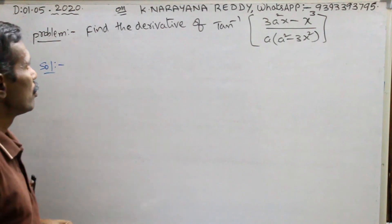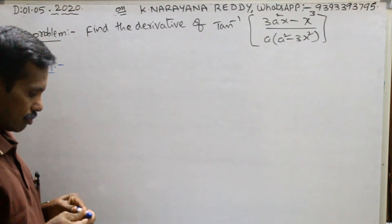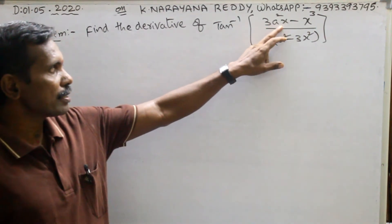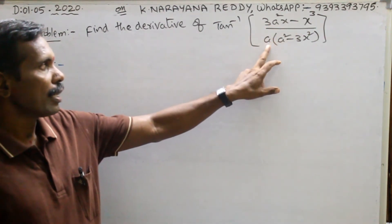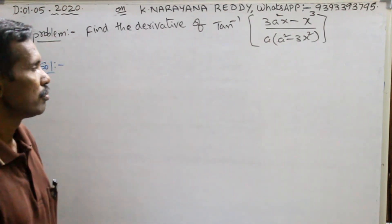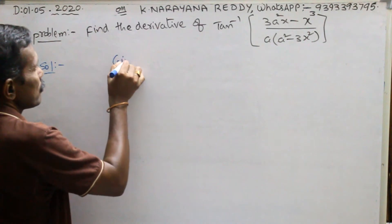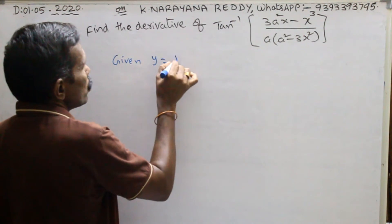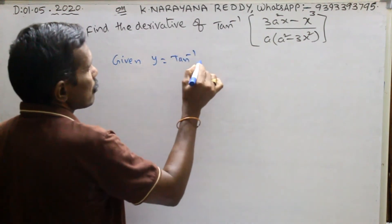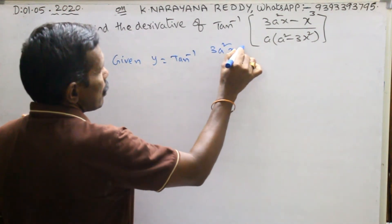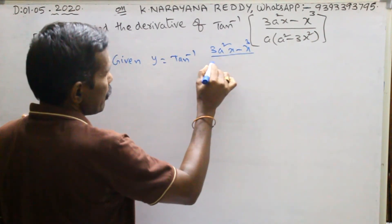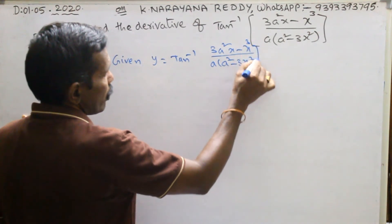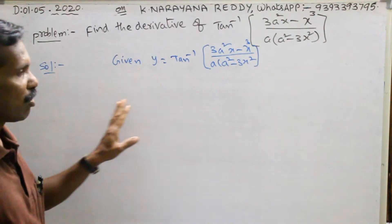See here — find the derivative of tan inverse of (3a²x minus x³) divided by a times (a² minus 3x²). Given: y equals tan inverse of (3a²x minus x³) divided by a times (a² minus 3x²). Okay? This is the given problem.